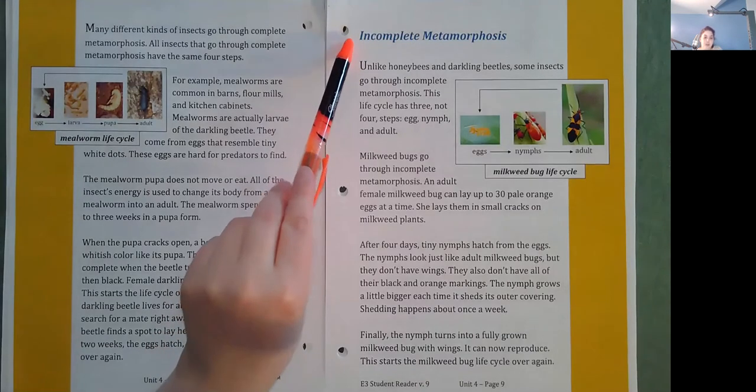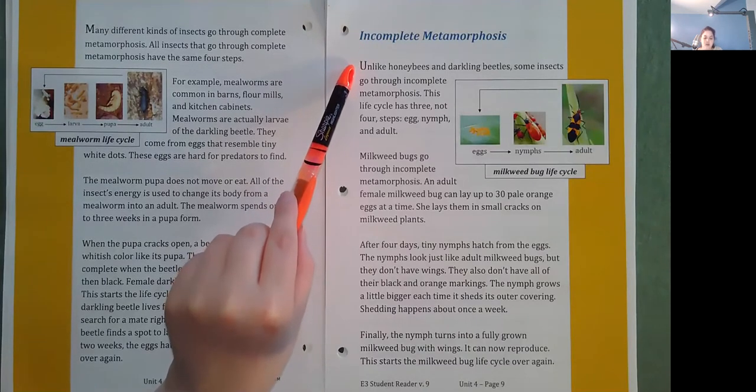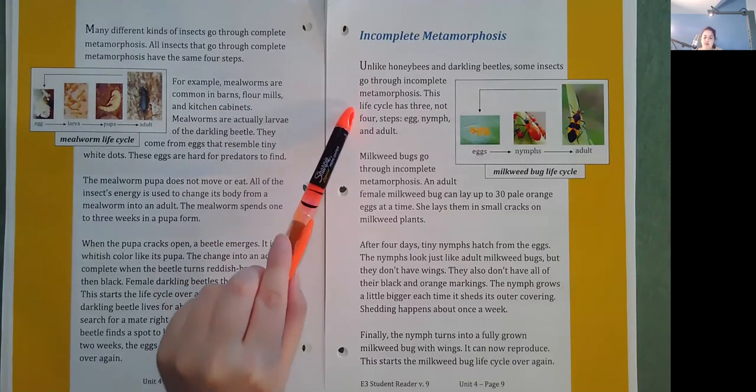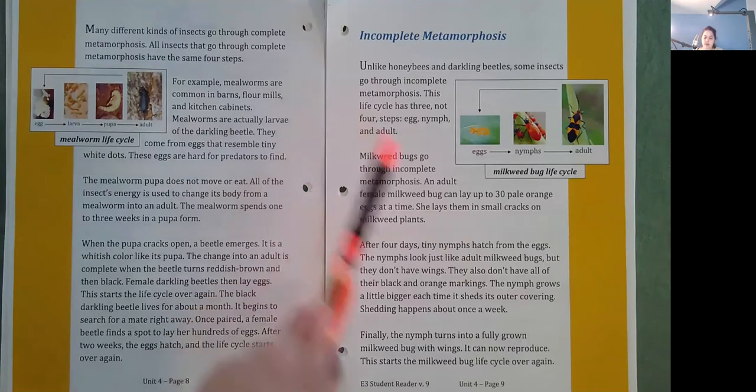Incomplete metamorphosis. Unlike honeybees and darkling beetles, some insects go through incomplete metamorphosis. This life cycle has three, not four steps. Egg, nymph, and adult.